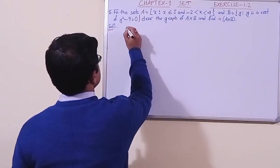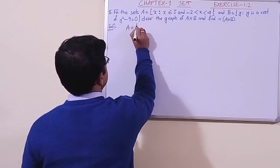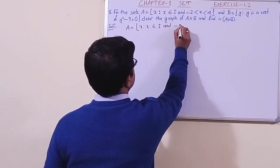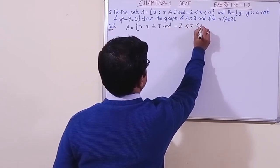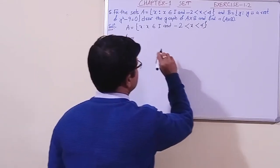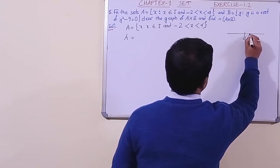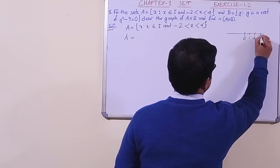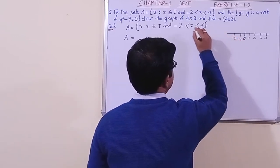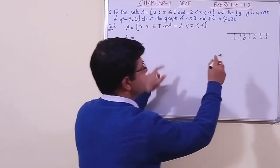Let us write the elements of set A using the tabular method. Set A is x such that x belongs to integers and minus two is less than x less than four. Using the number line: minus one, zero, one, two, three. So set A equals minus one, zero, one, two, three — these are the integers between minus 2 and 4.